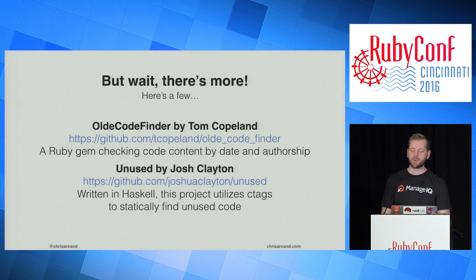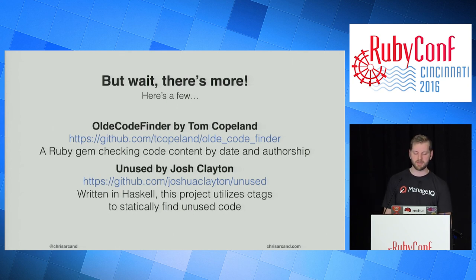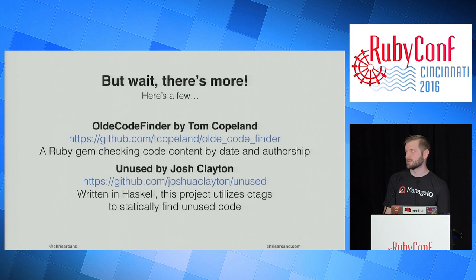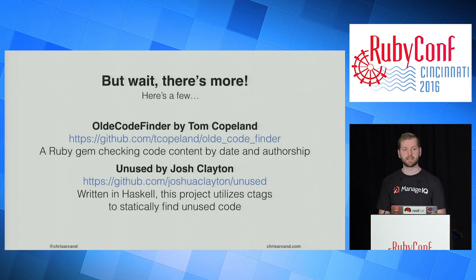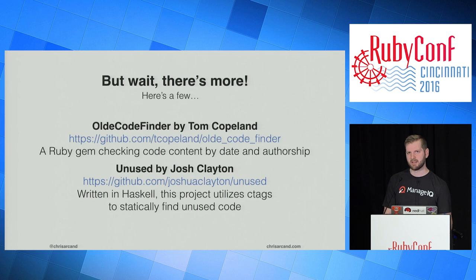Tools like this are but one tool in the toolbox when finding ways to clean up your code base. Today we looked at parsing and statically analyzing Ruby to find potentially uncalled code, but there are many more tools to use in combination. There's 'old_code_finder' by Tom Copeland, which checks code by date and authorship — useful for reviewing code from developers who have long since left. There's also 'unused' by Josh Clayton over at Thoughtbot, written in Haskell, which uses ctags to statically find unused code across programming languages. And someone mentioned a library called Scythe as well — check that out too.